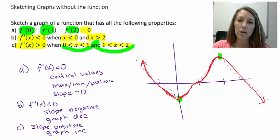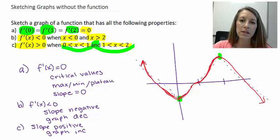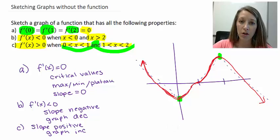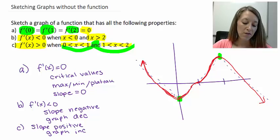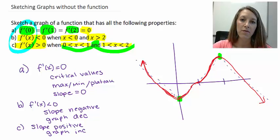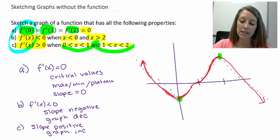There might be a little discrepancy between my graph and yours, but the only possible discrepancy is where the graph sits on the y-axis — it could be shifted up or down a bit. But the shape of the graph must be exactly the same. Now, the information this graph gave us was just first derivative information. Let's see what happens if they give us something beyond first derivative information — here's a second example.